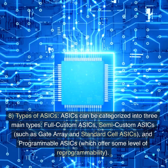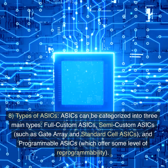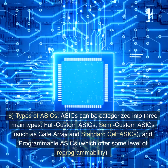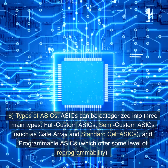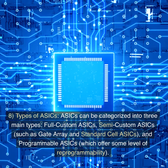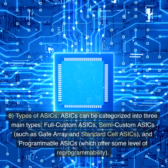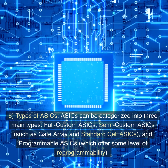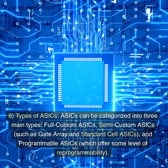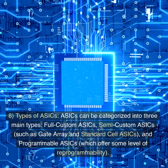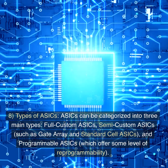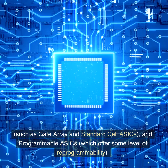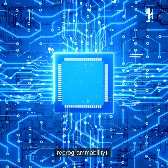8. Types of ASICs. ASICs can be categorized into three main types: full-custom ASICs, semi-custom ASICs such as gate array and standard cell ASICs, and programmable ASICs, which offer some level of reprogrammability.